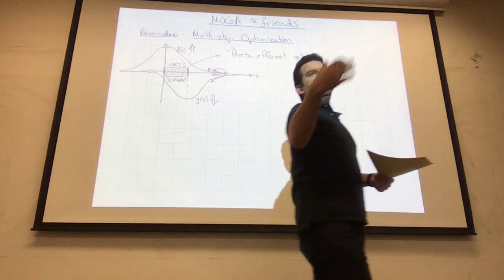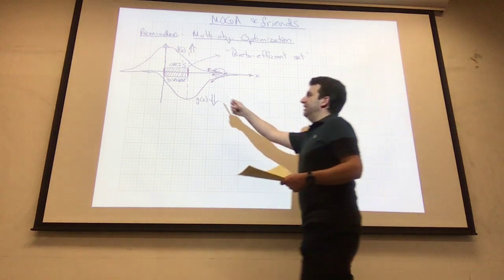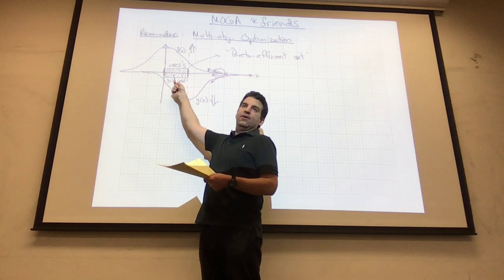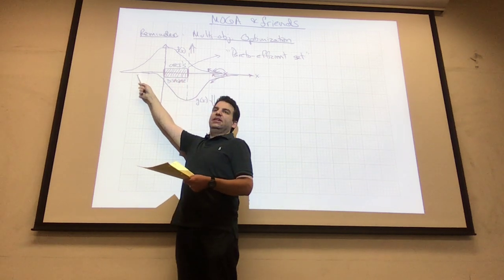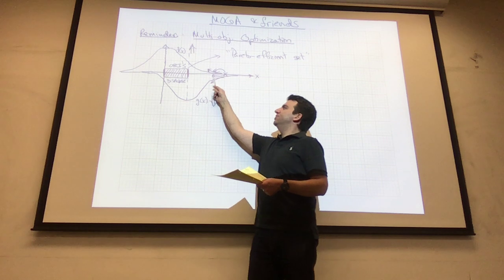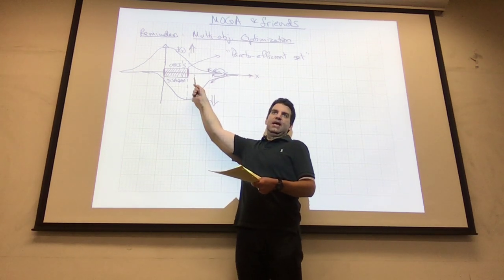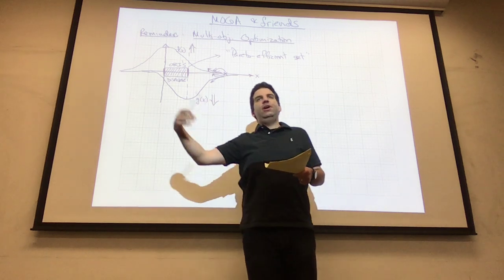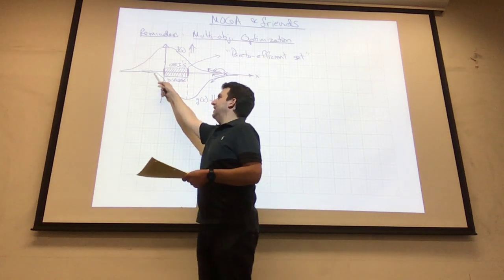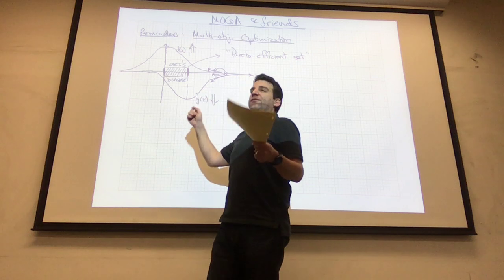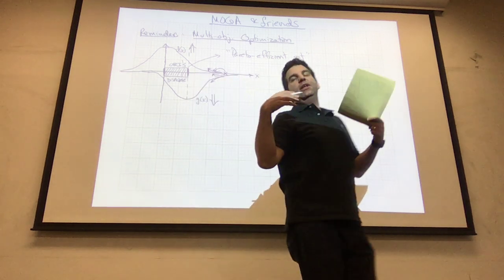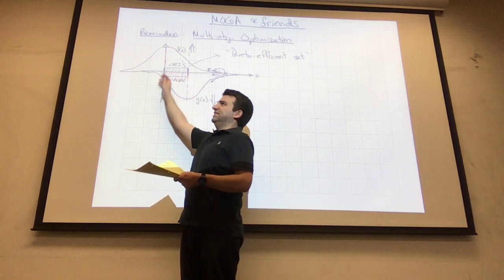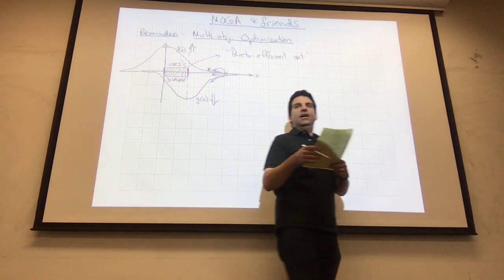It doesn't mean you as a designer shouldn't pick a different point — it just means I have no objective way to tell you which point is better. Out here I can say you should never be in these points, but if I throw three, four, or five objectives at you, it's not easy to graph or express them. I want a computer program to pop out this set — that's what we're going after.